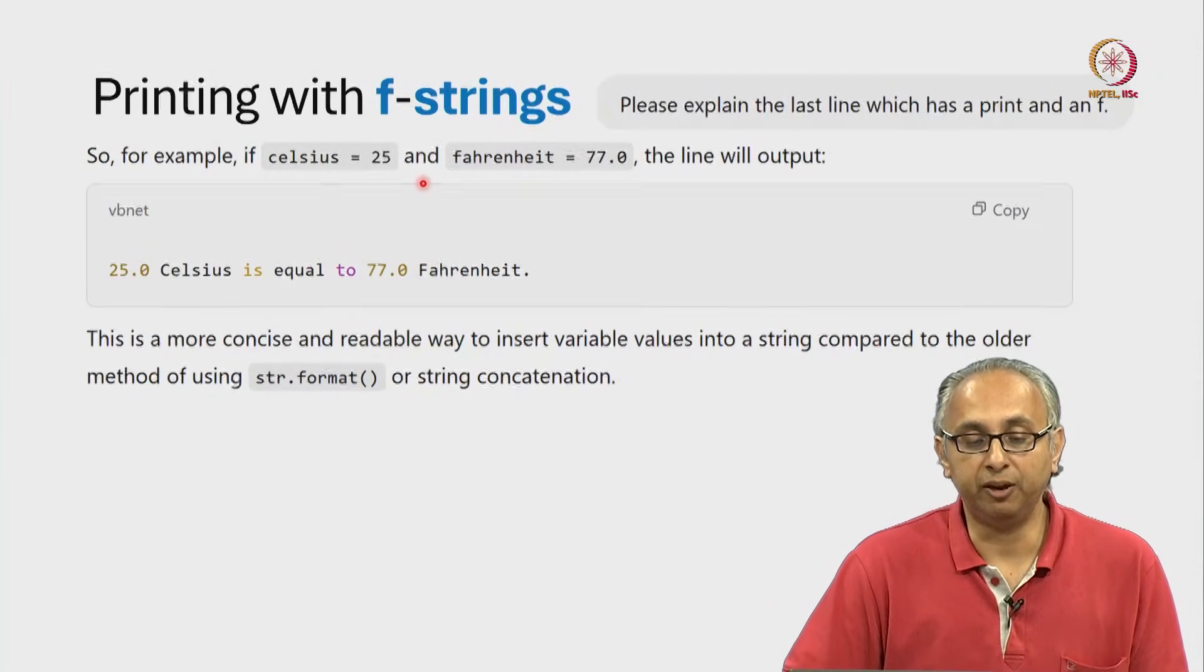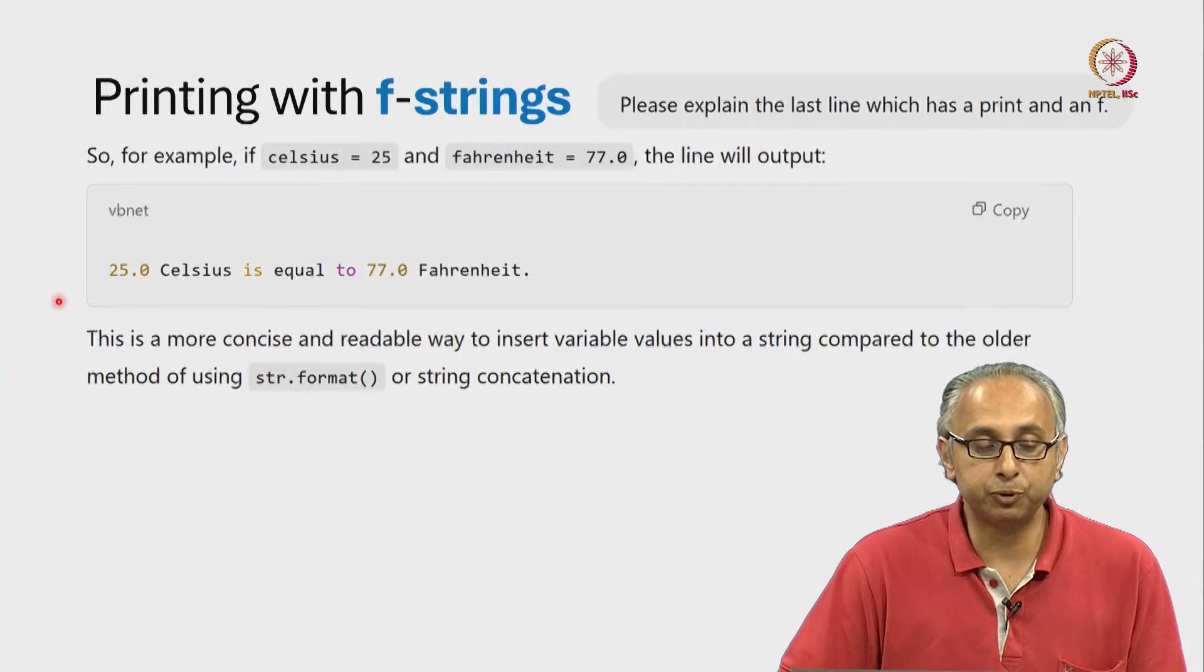The ChatGPT answer continues from here with a helpful example. It says, for example, if Celsius is 25 and Fahrenheit is 77, then that F string will print like this. 25.0 Celsius is equal to 77.0 Fahrenheit.